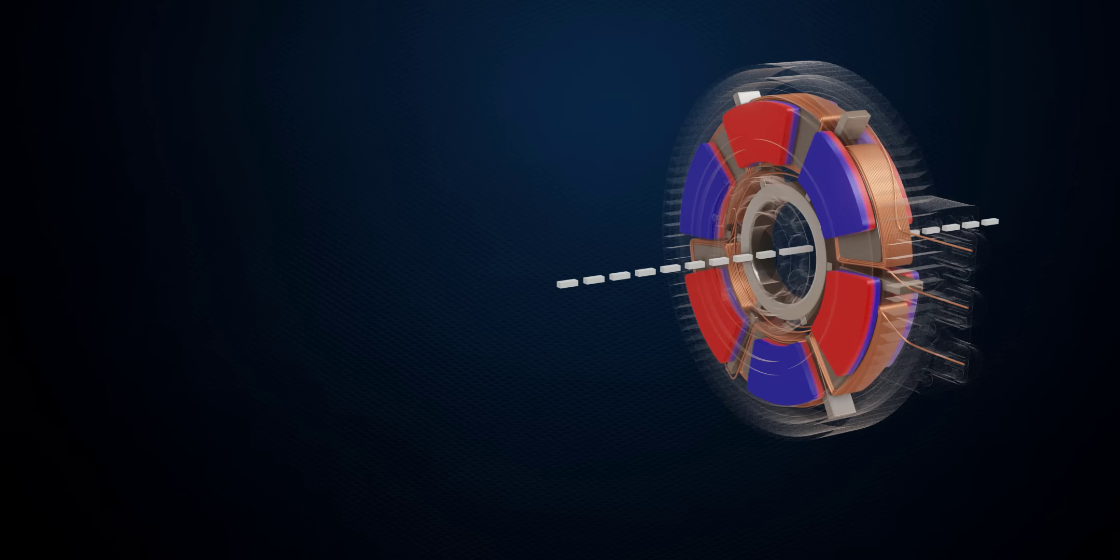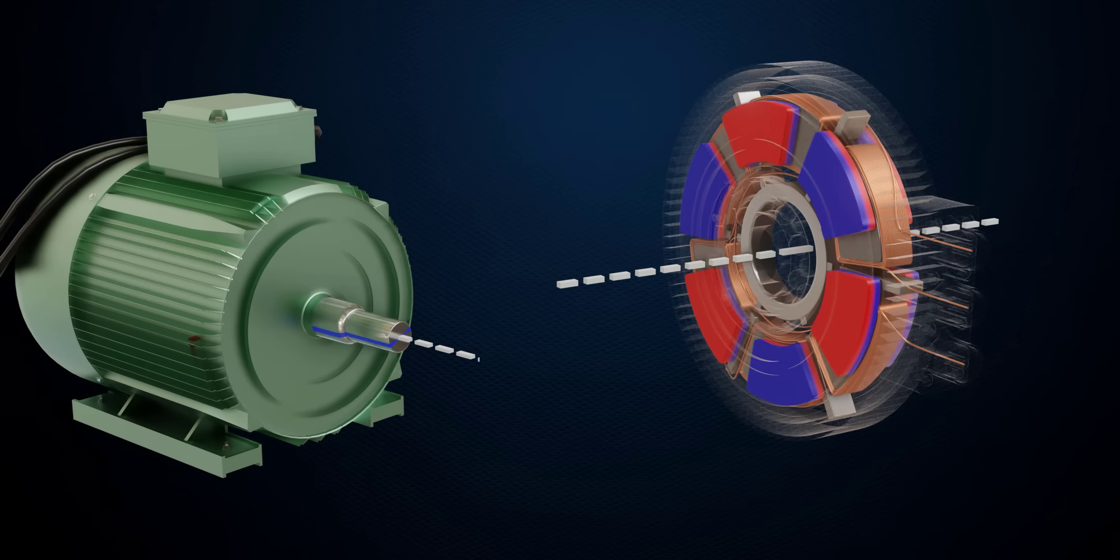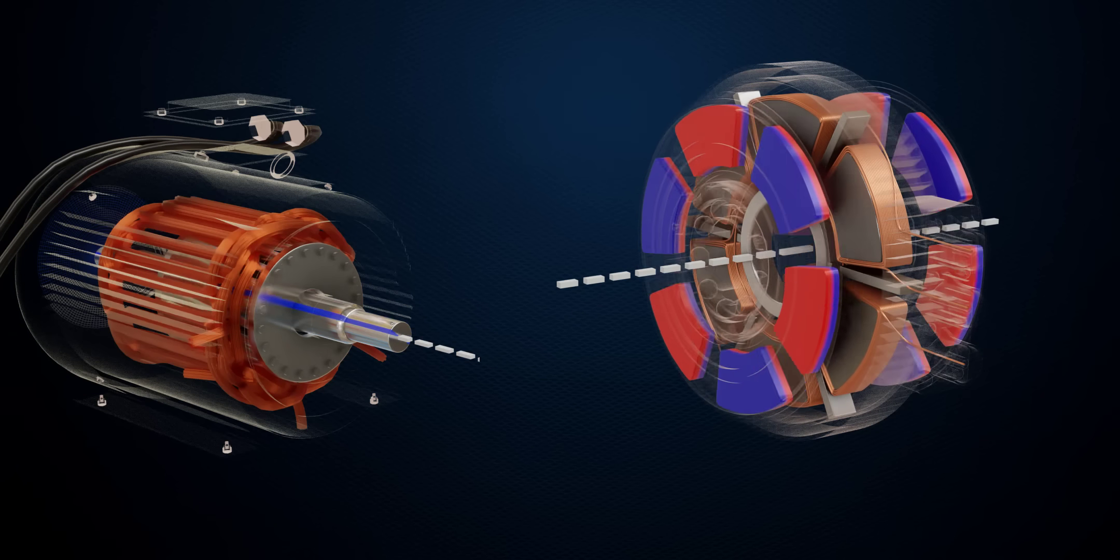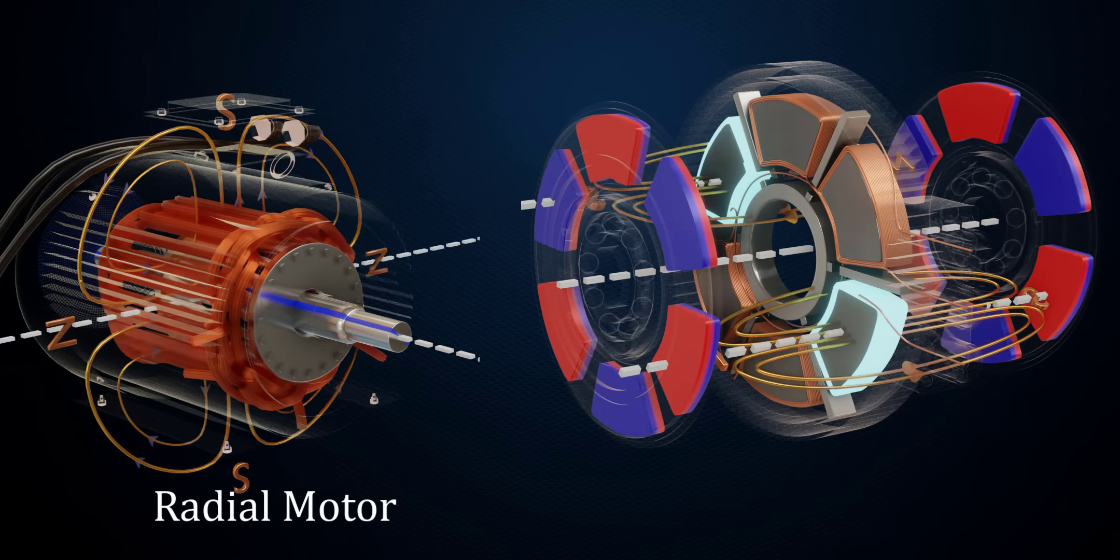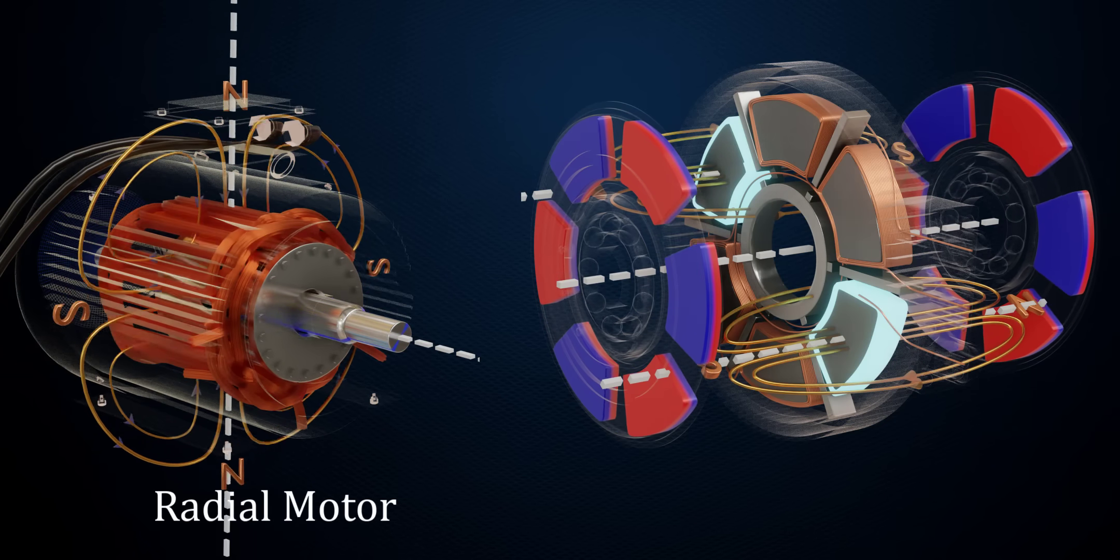Based on the orientation of magnetic flux, electric machines can be divided into two types. First is the radial flux motor, which is used in 99% of applications today. And second is the axial flux motor.